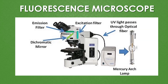This is the image of the fluorescence microscope. Like an ordinary light microscope, it also contains a light source, condenser, objective lens, and eyepiece. But apart from the normal parts, it contains some special parts: a mercury arc lamp which acts as a light source, an exciter filter or excitation filter, a dichromatic mirror, an objective lens, a barrier filter or emission filter, and the eyepiece.